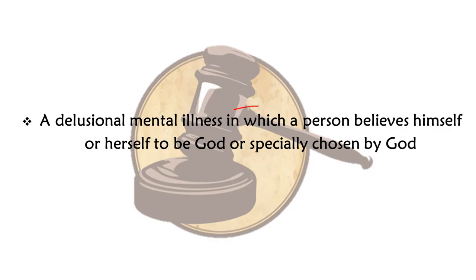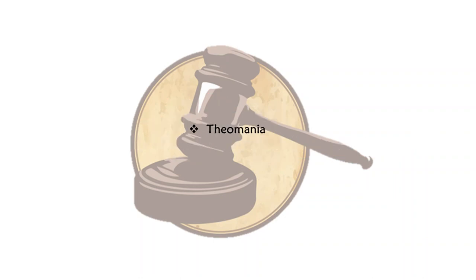A delusional mental illness in which a person believes himself or herself to be God, or specifically chosen by God for some purpose. By the way, I have made separate videos for phobias, illnesses and manias, so you can watch those as well. The answer for this mental illness or mania is theomania.